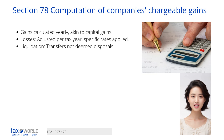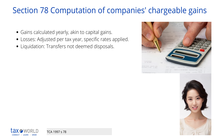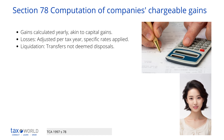Section 78 provides that a company's chargeable gains are calculated by considering tax years as accounting periods. These gains are then adjusted to get an amount that, when taxed at the corporation tax rate, results in a tax equal to the hypothetical capital gains tax.